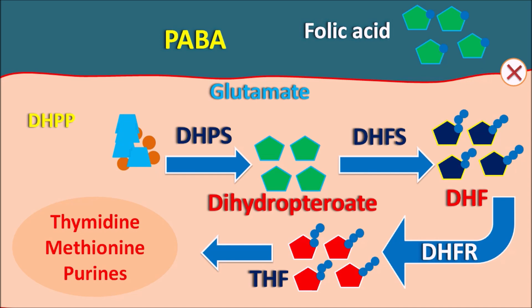The bacteria requires PABA as the precursor for folic acid synthesis, which can be obtained from outside or via de novo synthesis within the bacteria. There are three important steps: Step 1 — DHPS converts PABA into dihydropteroate; Step 2 — DHFS converts dihydropteroate into dihydrofolate; Step 3 — DHFR reduces dihydrofolate into tetrahydrofolate. Drugs act on Steps 1 and 3 to inhibit folic acid synthesis and its reduction.